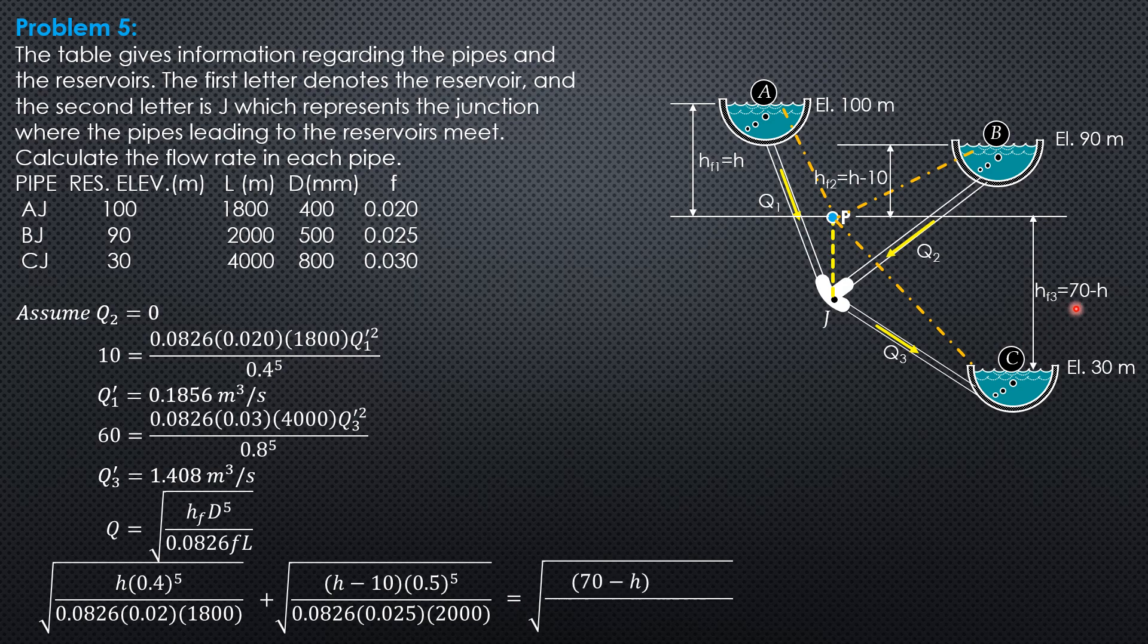Then it should be equal to Q3, which is square root of quantity 70 minus H. So simplifying inside, we have 0.05868 square root of H plus 0.08699 square root of H minus 10 equals 0.1818 square root of 70 minus H. So by trial and error, we anticipate that H is between, it should be greater than 10 but less than 60 or less than 70. So that's the range of values of H. So until the left is equal to the right, so by trial and error, H is equal to 45.02 meters.